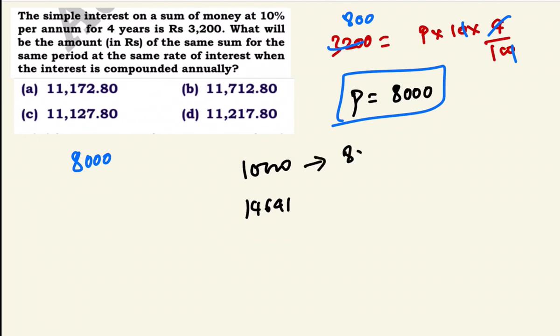Since 10,000 corresponds to principal Rs.8,000, the amount equals 8,000 × 14,641 divided by 10,000, which simplifies to 8 × 14,641 / 10.